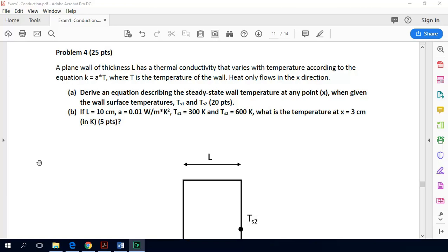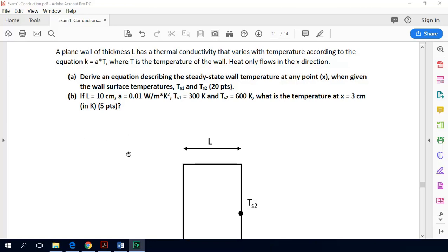The problem states a plane wall of thickness L has a thermal conductivity that varies with temperature according to the equation K, which is the thermal conductivity, equals A times T, where T is the temperature of the wall. Heat only flows in the x direction, which means we are only concerned with temperature changes in this direction, not in the y direction or not in the z direction.